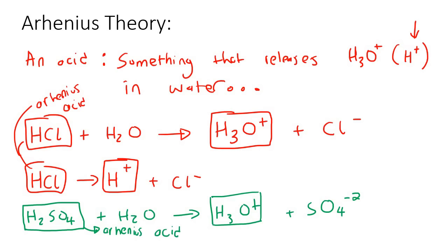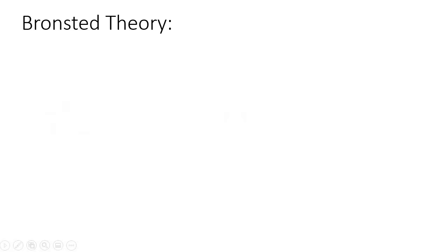The only way for us to be able to produce H3O+ is if we use water. That is why the Arrhenius theory is all about water — and also why the Arrhenius theory is not that good, because not all reactions take place in water. For this reason, we needed Bronsted.